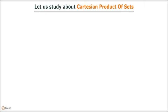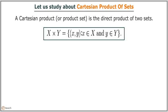Let us study about Cartesian product of sets. A Cartesian product or product set is the direct product of two sets. The Cartesian product of set X and set Y is represented by X into Y. X into Y equals the set of all ordered pairs such that x belongs to the set X and y belongs to the set Y.